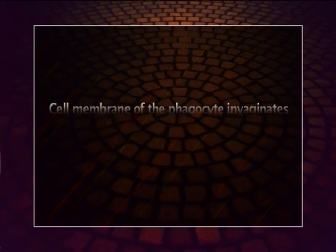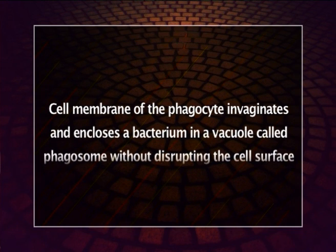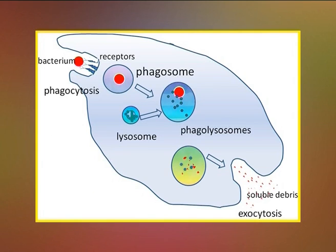Neutrophils digest and engulf microorganisms infecting body tissues — they are called phagocytes and the process is called phagocytosis. During phagocytosis, the cell membrane of a phagocyte invaginates and encloses a bacterium in a vacuole called a phagosome. The vacuole then fuses with a lysosome, forming a phagolysosome, in which the bacterium is digested by enzymes present in the lysosome.